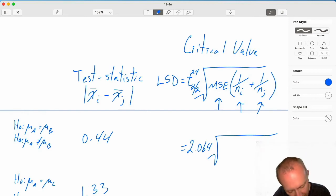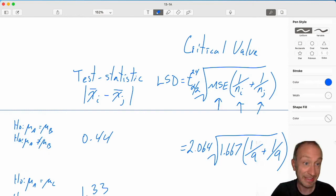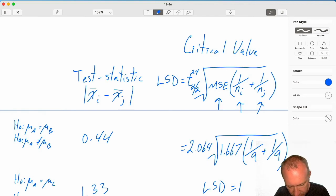My mean squared error we saw is 1.667. And my samples all had 9 observations in them. Once again, if our samples were different sizes, we'd have a different LSD for each of those pairs that have different sizes. So let's go ahead and calculate this. 1 ninth plus 1 ninth, of course, is 2 ninths times 1.667. And then I'm going to take the square root of that and multiply by 2.064. This gives me my LSD equal to 1.256.